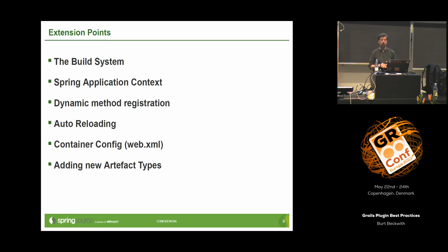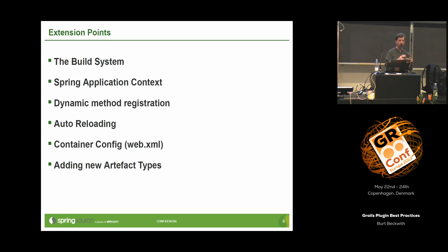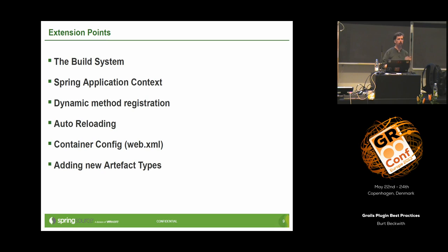You can also edit the WebXML to add in filters, servlets, and that sort of thing. You can even add in new artifacts, though that's a bit rare. One of the first plugins to do that is the Quartz plugin, which adds a job artifact. So rather than going to the native Quartz API directly, you can create a Groovy class. Artifacts in Grails typically have a naming convention and a folder, and you set some properties and magic happens.